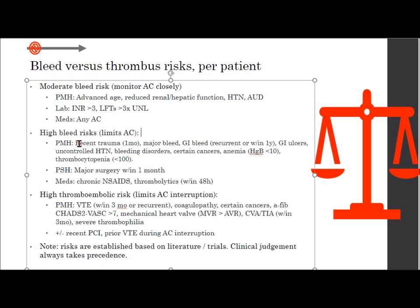High bleed risk factors include: recent trauma within one month, major bleeds, GI bleeds that are recurrent or within one year, GI ulcers, uncontrolled hypertension, bleeding disorders, certain cancers, anemia, thrombocytopenia, major surgery within one month, chronic NSAIDs, or thromboembolism within two days or 48 hours. If a patient has any of these factors, you may worry about starting anticoagulation on them.